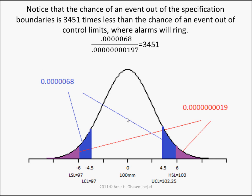This means that the chance of an event outside the specification boundaries — more than 6 standard deviations from the mean — is 3,451 times less than the chance of an event outside the control limits where the alarms will ring. So at the control limit point, we are notified that production is going out of control, and there is still a good safety margin.